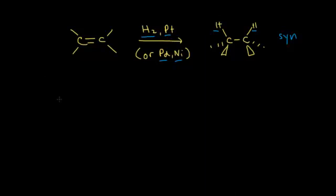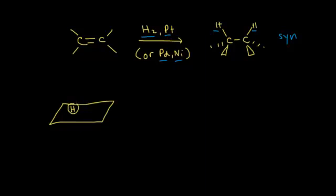So we have our metal catalyst over here. Let's go ahead and draw our flat metal catalyst. These metals are chosen because they adsorb hydrogen really well, which means that if you bubble hydrogen gas through, the hydrogen is going to be adsorbed to the surface of that metal catalyst.